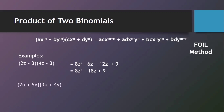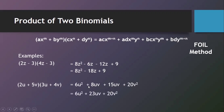For the second example, we have (2U plus 5V) multiplied by (3U plus 4V). The first terms: 2U multiplied by 3U gives 6U squared. Outer term: 2U multiplied by 4V gives 8UV. Inner term: 5V multiplied by 3U gives 15UV. Last terms: 5V multiplied by 4V gives 20V squared. Combining like terms, 8UV plus 15UV gives 23UV. So the final answer is 6U squared plus 23UV plus 20V squared.